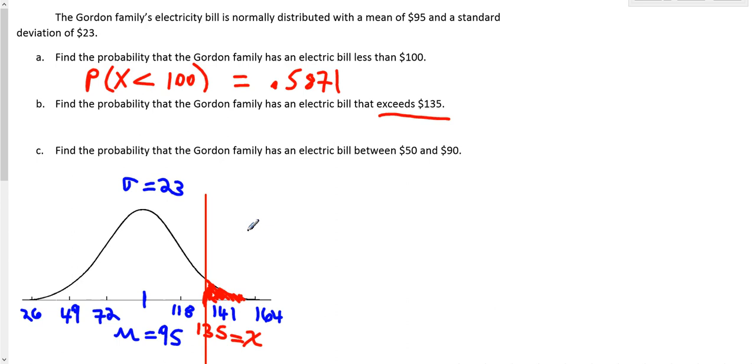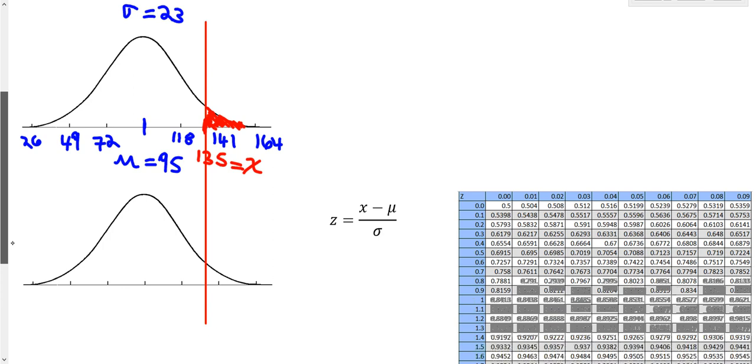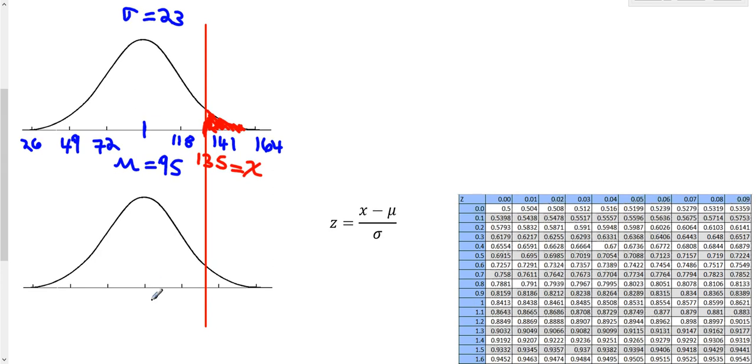The problem with that is that the table that we have been using only gives us the area to the left. So we can still do it the way we did the last problem, by looking at the z table, where for z, the mean is equal to 0 and the standard deviation is equal to 1. So this is the z score, while this is just the x random variable. This random variable is x. This is the distribution of x. While this one down here is z.